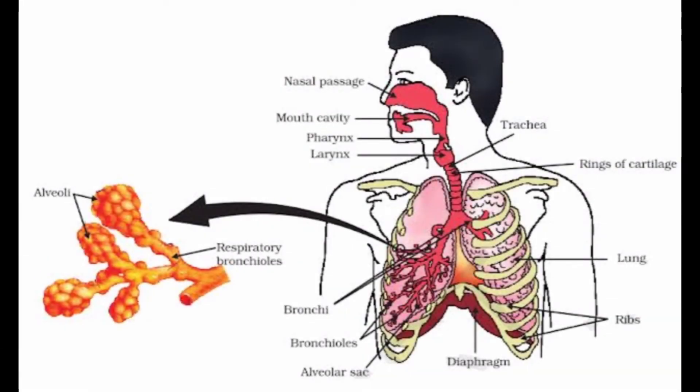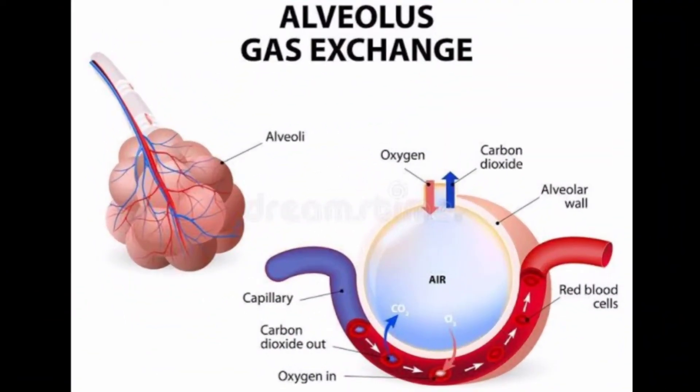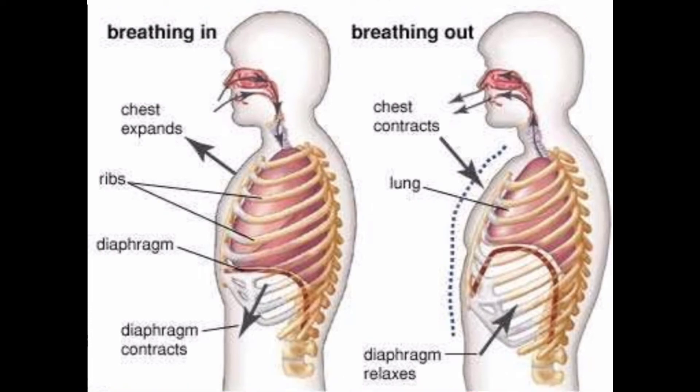It is in the alveoli where the exchange of gases takes place. When we breathe in air, the diaphragm contracts and flattens, which results in an increase in the volume of the chest cavity. Due to this expansion, the air pressure in the lungs decreases, thus air from outside rushes into the lungs through the nostrils, trachea, and bronchi. Therefore, the air sacs of the lungs get filled with air.